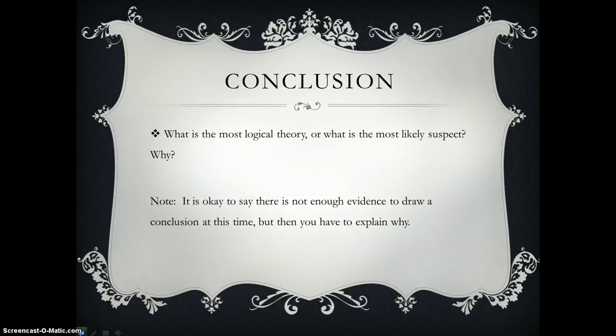Finally, in the conclusion, what's the most logical theory, or what is the most likely suspect, and why? So you've gone through all of this. Why is this one the one you have settled on? Note that it is okay to say there's not enough evidence to draw a conclusion at this time, but then you have to explain why. Why is that not possible at this point in time?